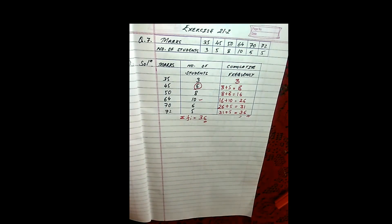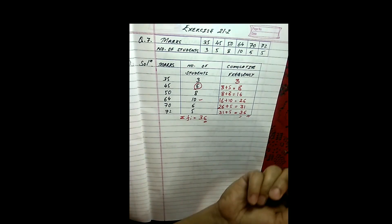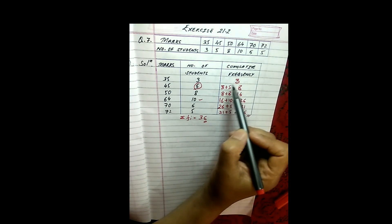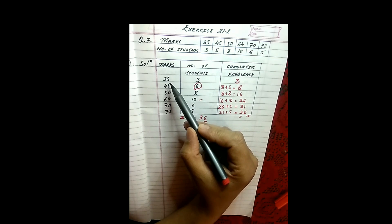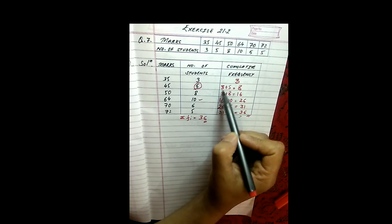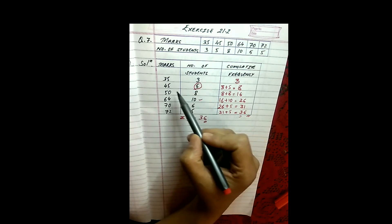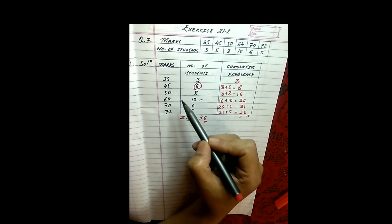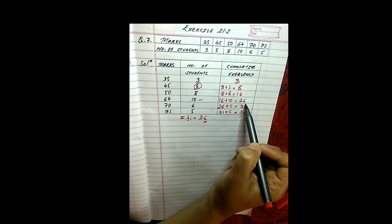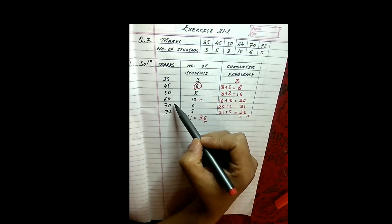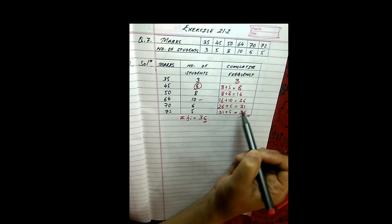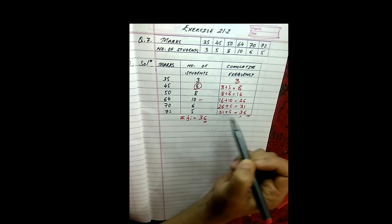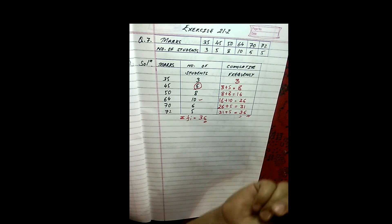Now we have obtained the cumulative frequency. What does this mean? This means the first 3 students get 35. The next 5 students get 45 or less than 45. Then 16 students get 50 or less than 50. Then 26 students get either 64 or less than 64. And 31 students get 70 or less than 70. And all 36 students, they get either 72 or less than 72.